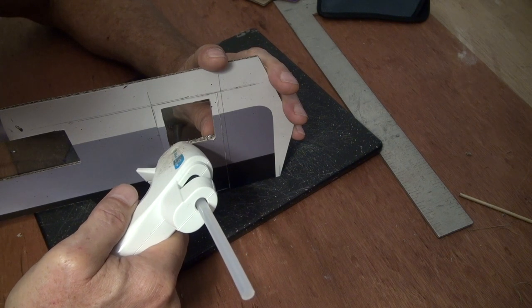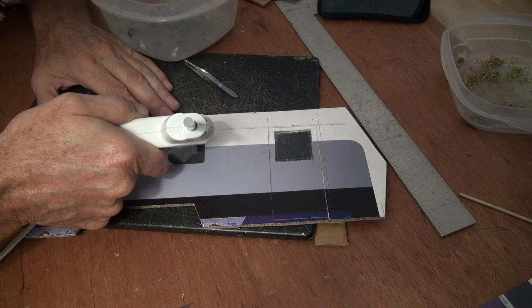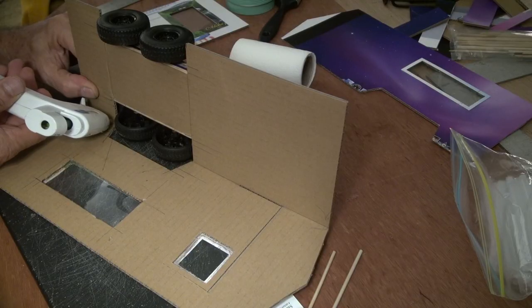I'm using the hot glue gun to put the windows in, which I realize is probably not the best thing because you get the glue on the window and it's not going to come off. So I put a paper border around it so you wouldn't see it so much.